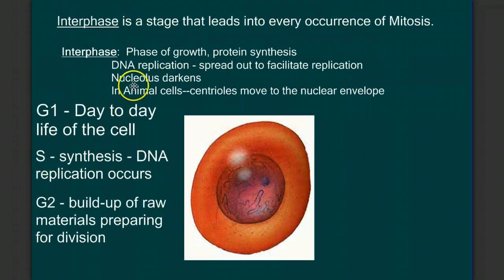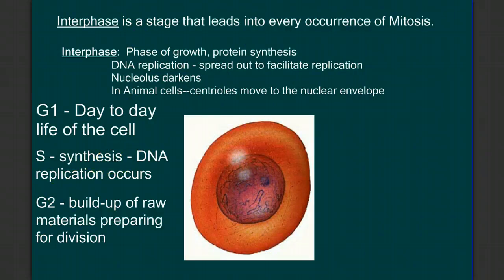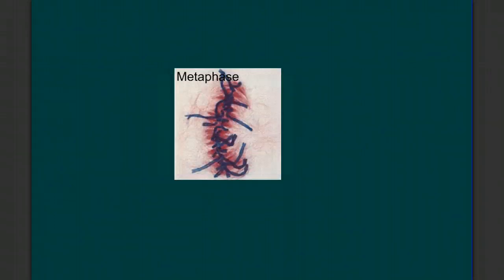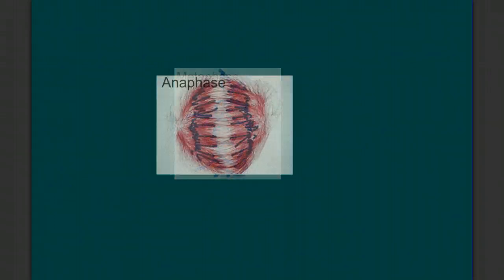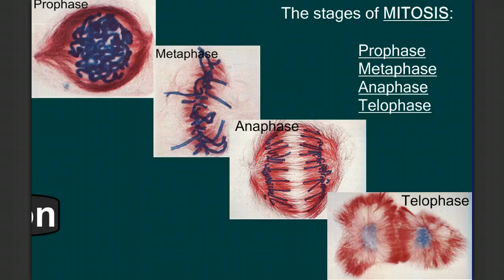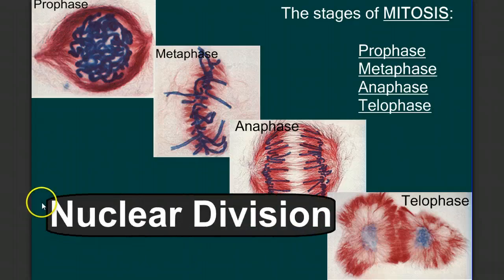After we've completed interphase, a cell is prepared to enter the stages of mitosis: PMAT — prophase, metaphase, anaphase, and telophase. The stages of mitosis are nuclear division.